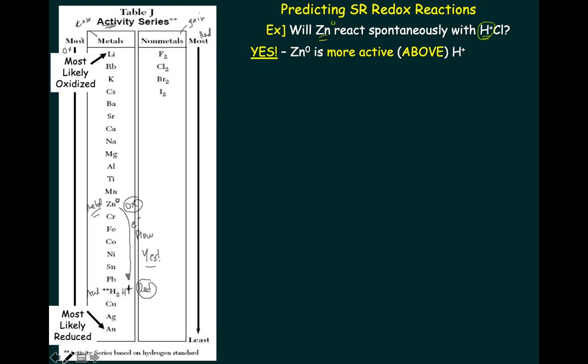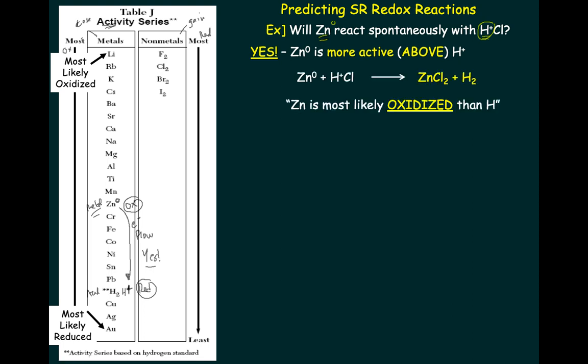Zinc is more likely to be oxidized than H, so this will take place spontaneously. The more active element is more likely to be oxidized. Zinc becomes two plus — you get the single replacement, with zinc kicking out hydrogen by giving electrons to it. Zinc becomes oxidized; hydrogen becomes reduced. Electrons always flow from the one that's oxidized to the one that's reduced according to the chart. And you produce hydrogen gas from this.